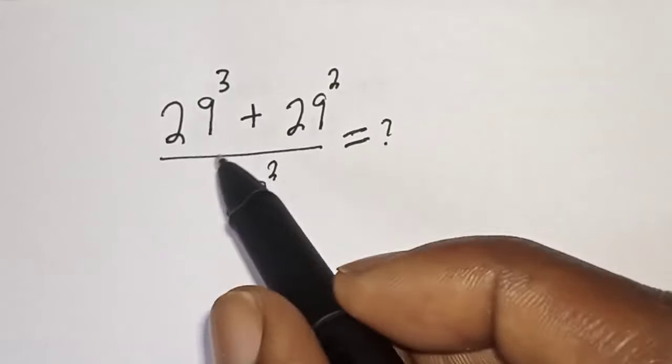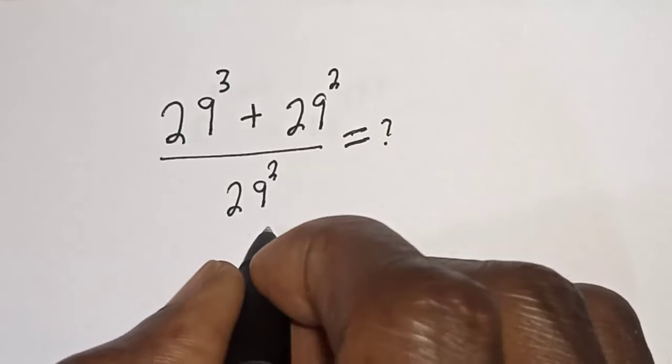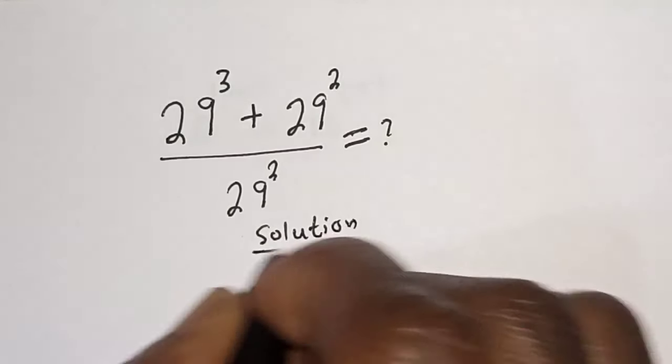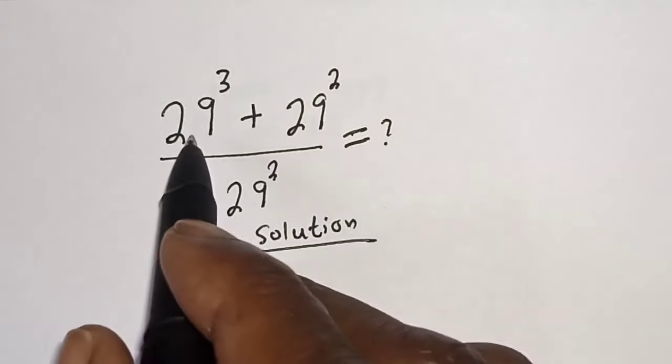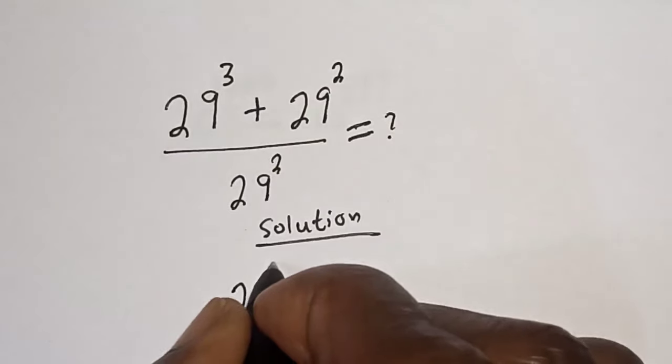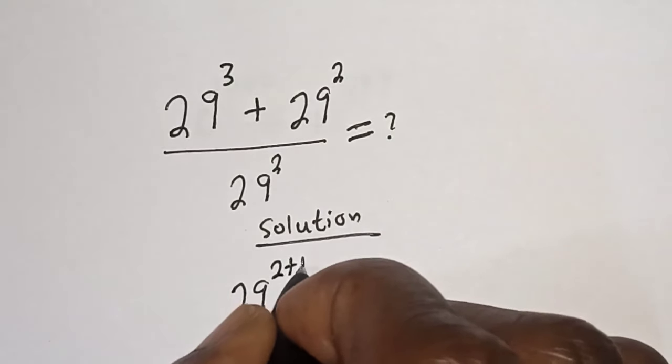to like, share, comment and subscribe. Solution: 29 raised to power 3 can be written as 29 squared plus 1